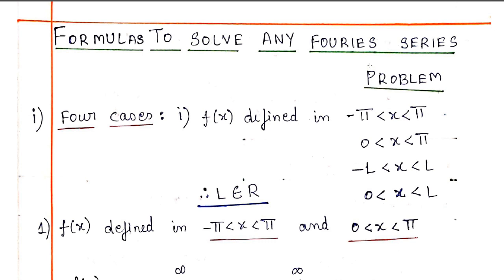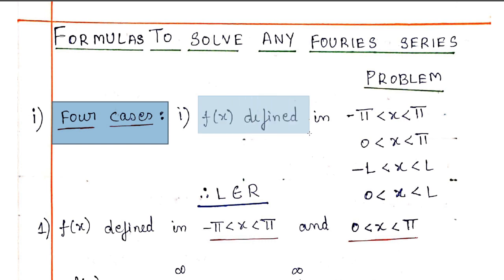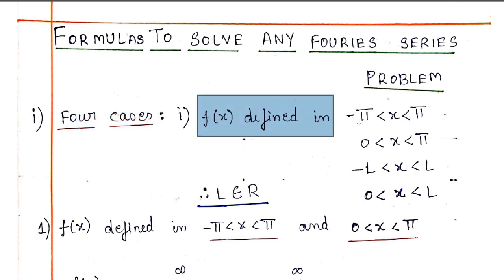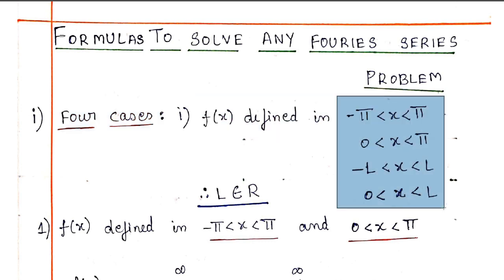In this video, there are 4 types in Fourier series. The function is defined in 4 types of cases. We have minus pi to 0, 0 to pi, minus l to l, then 0 to l.